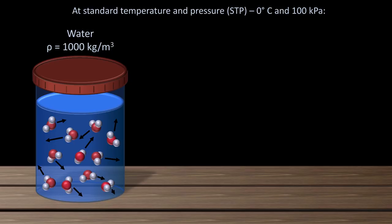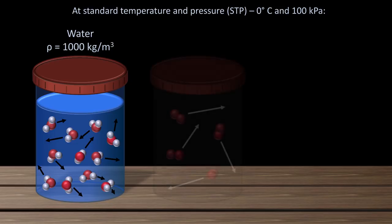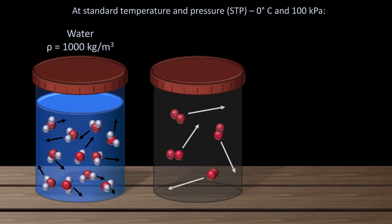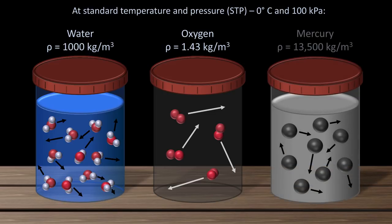If you're thinking, what a convenient coincidence it is for water's density to be such a nice round number, it's not a coincidence at all. The unit of measurement of a kilogram is actually defined based on the density of water, which results in a relationship that's critical to remember: 1 liter of water is 1 kilogram in mass by definition. Another commonly encountered fluid is oxygen, with a density of 1.43 kilograms per cubic meter. At the other end of the density spectrum is the densest of all liquids, mercury, at a whopping 13,500 kilograms per cubic meter.